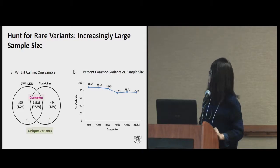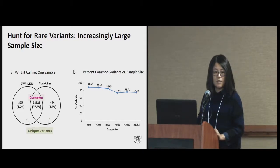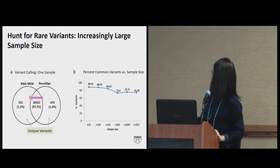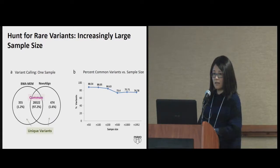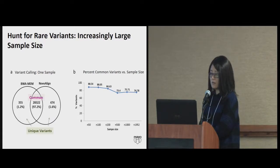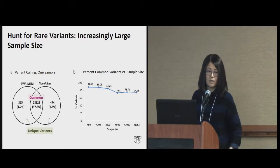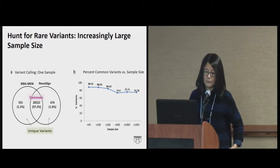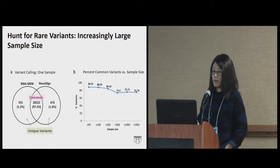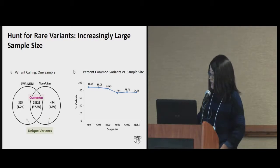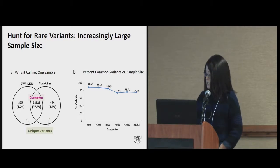25% is a huge number you cannot really ignore. So the question is: what are these 25% of unique variants? Are they good variants? Are they rare, found among 2,000 individuals? Do they happen in multiple individuals? Are they known variants or totally novel? These are the questions we asked.